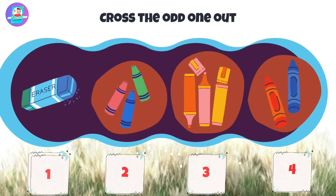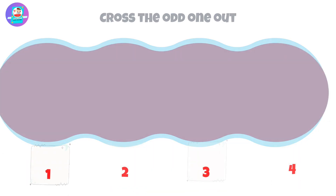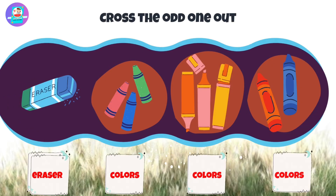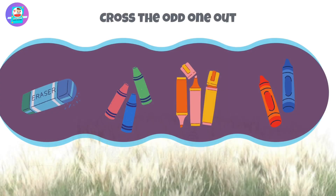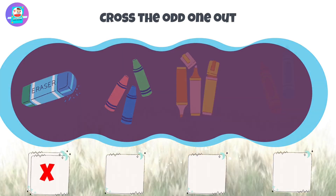Okay, let's check first. When we see here we have 3 snakes and 1 fish.